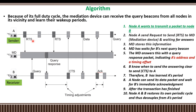Now we can look at the exact algorithm. Node A acts as the sender, Node B acts as the receiver, and the MD (Mediation Device) acts as the mediator. When A wants to transmit packets to B, A first transmits an RTS (Request to Send) packet to the mediation device. Since we don't know the exact sleep time and wake-up time of B, A sends the RTS packet to the mediation device, which stores this information.